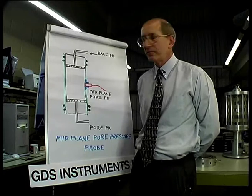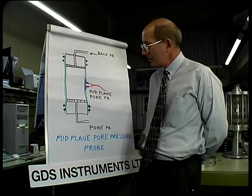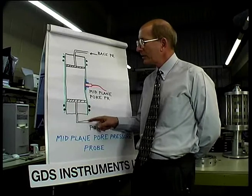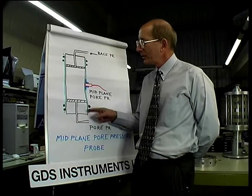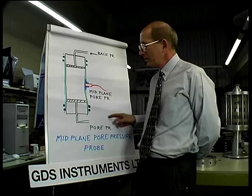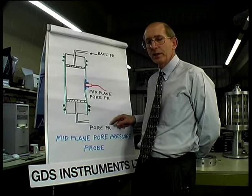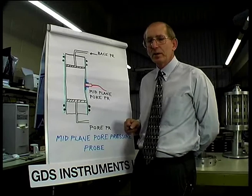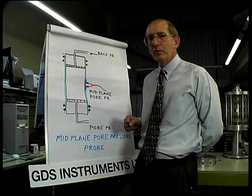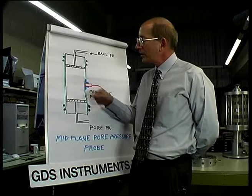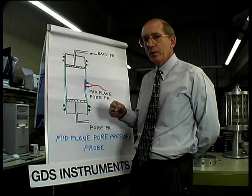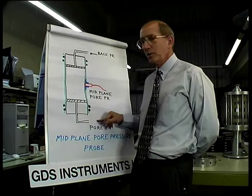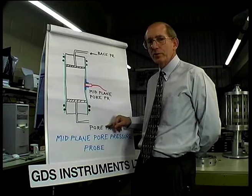There are some disadvantages to this method of measurement. The first is that there is a significant volume of water in the pipework that leads from the base pedestal to the pore pressure transducer, which is mounted outside of the triaxial cell. This means that with test specimens of low permeability, there is a significant amount of time required to allow water to flow from the test specimen into the pipework to energize the pore pressure transducer.